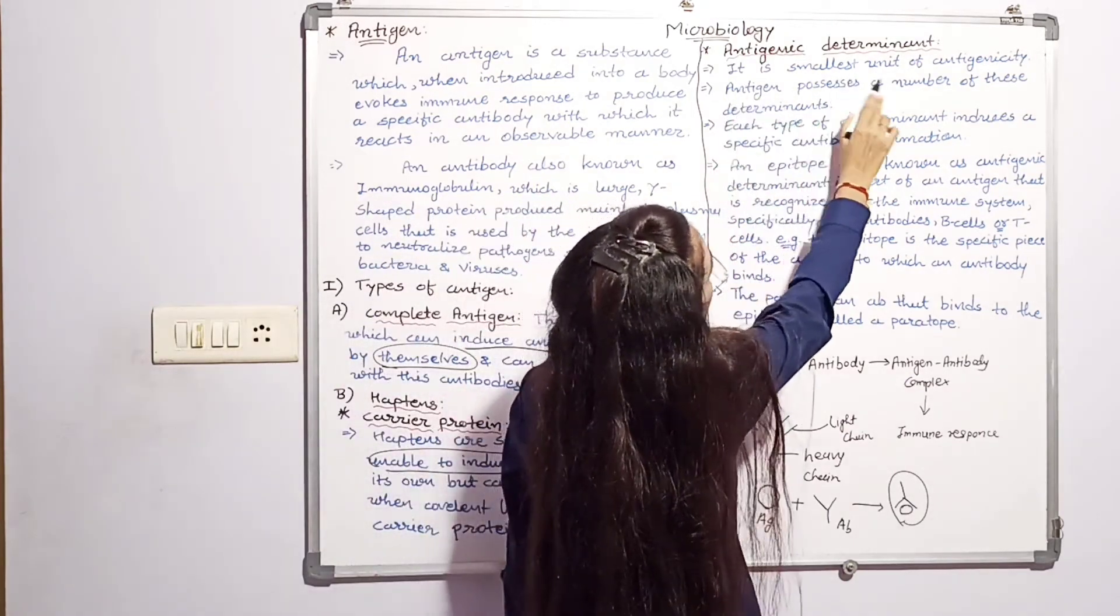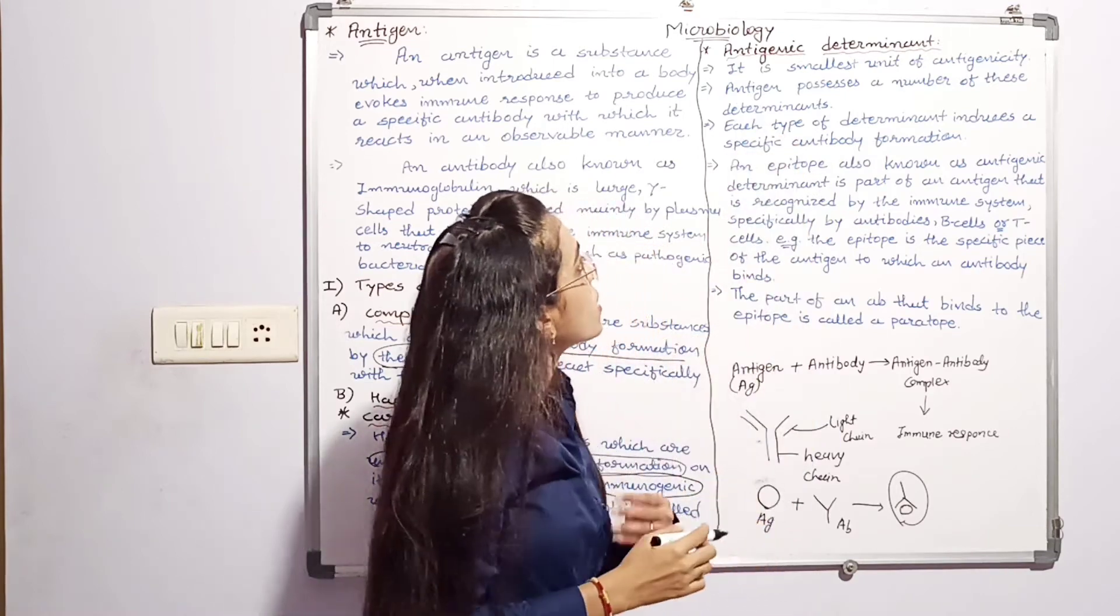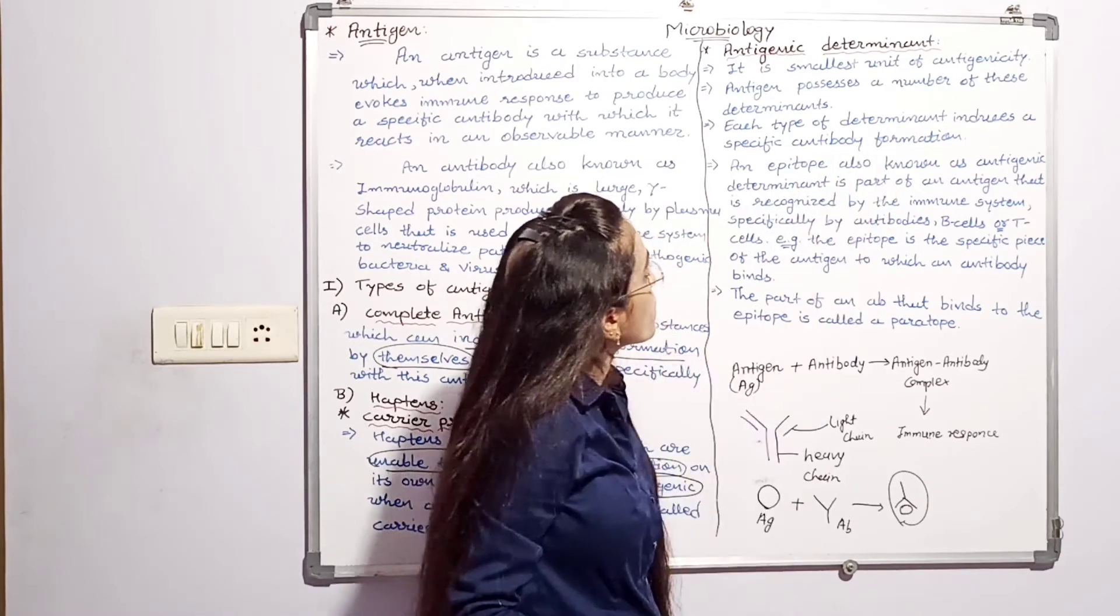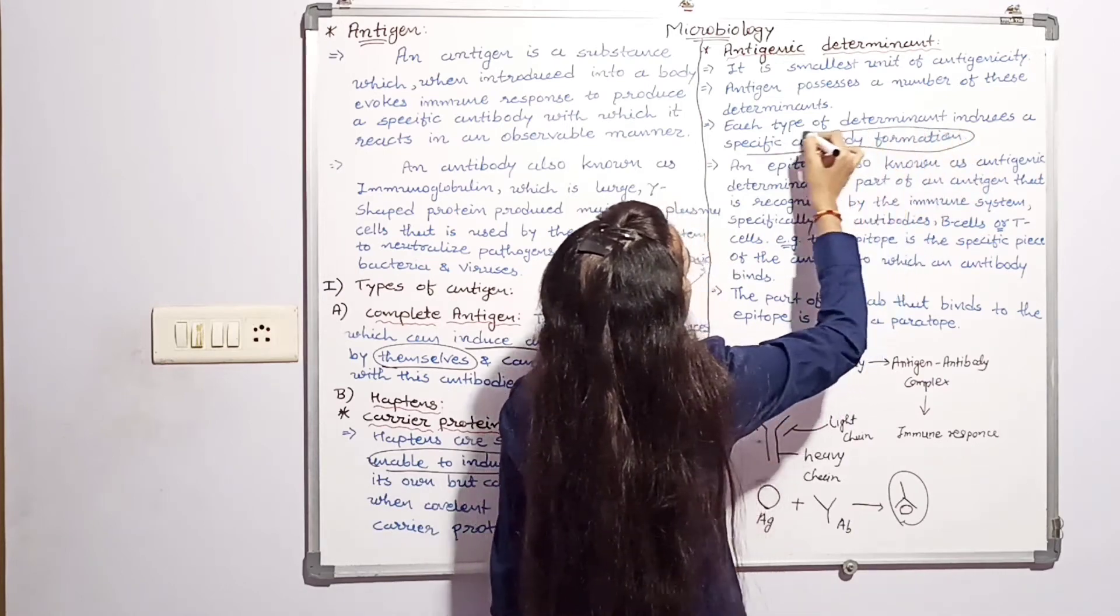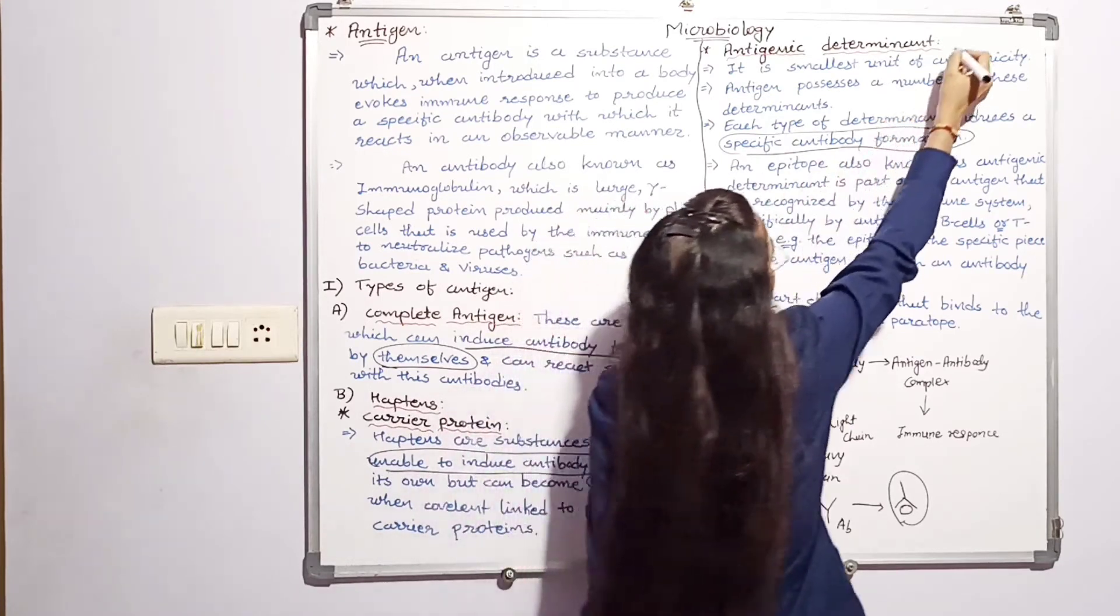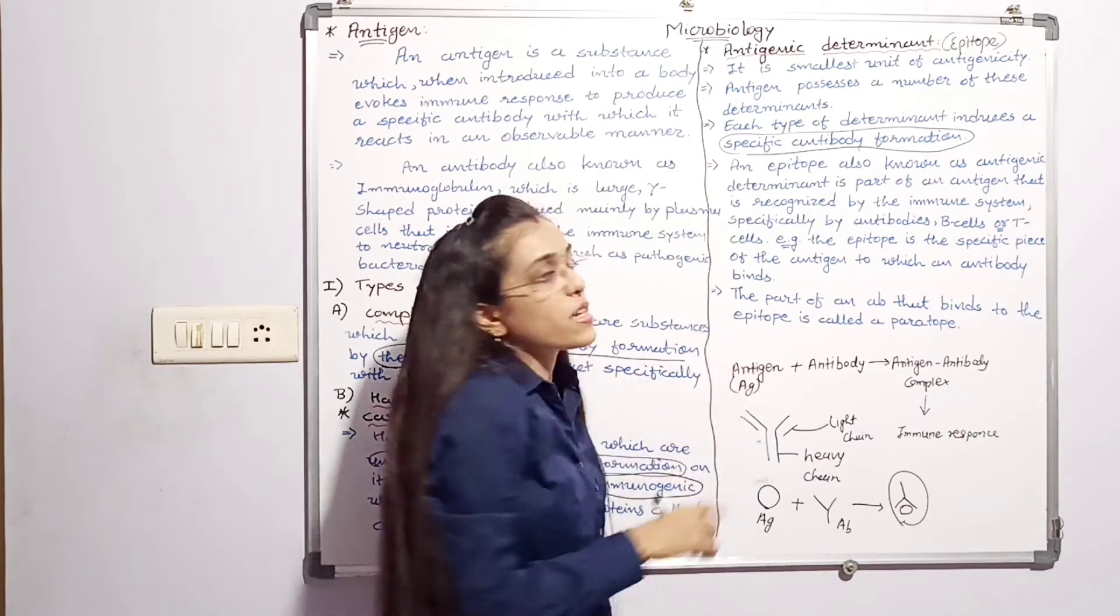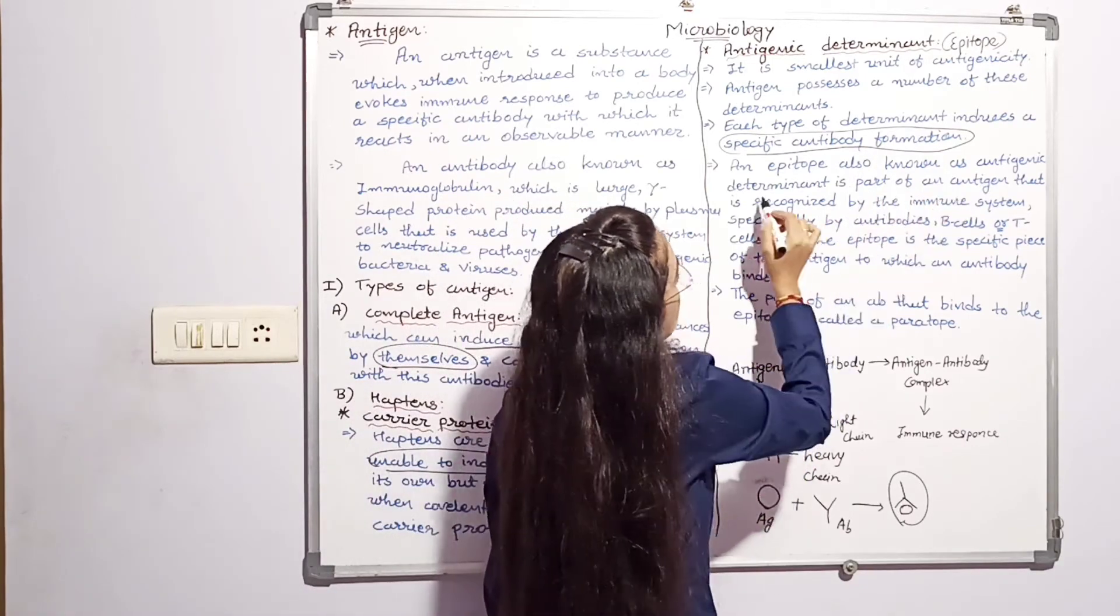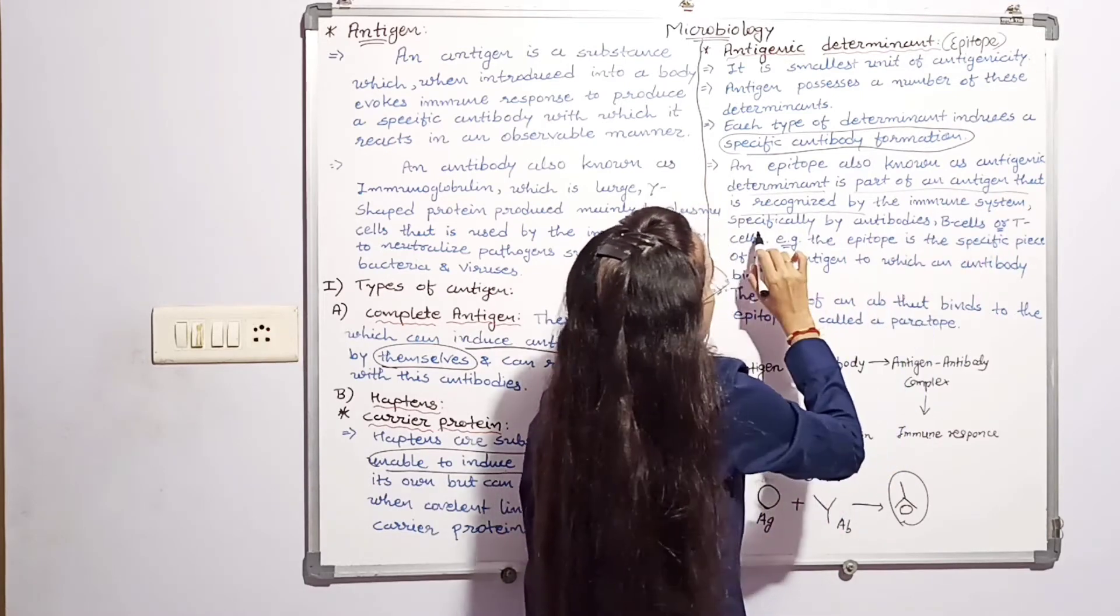Epitope is the smallest unit of antigenicity. Antigen possesses a number of these determinants. Each type of determinant induces a specific antibody formation. An epitope, also known as an antigenic determinant, is a part of an antigen that is recognized by immune system specifically by antibody.